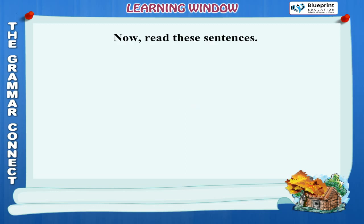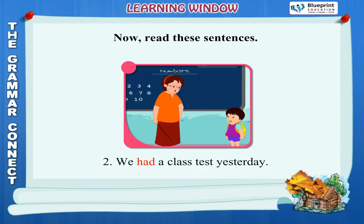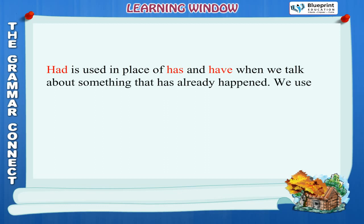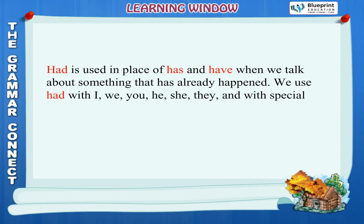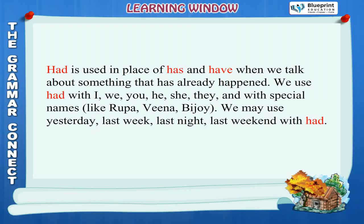Use of had: I had a birthday party last Sunday. We had a class test yesterday. Had is used in place of has and have when we talk about something that has already happened. We use had with I, we, you, he, she, they and with special names like Rupa, Veena, Bijoy. We may use yesterday, last week, last night, last weekend with had.